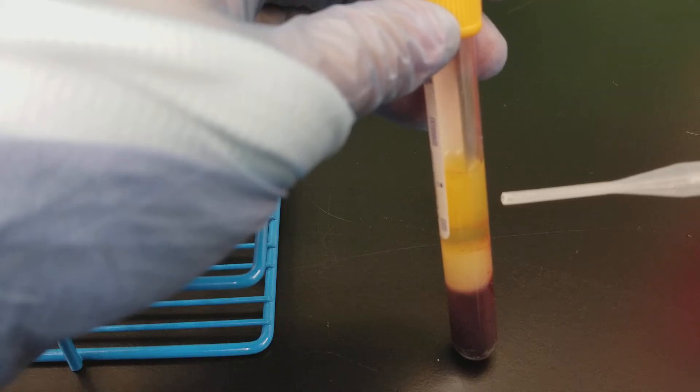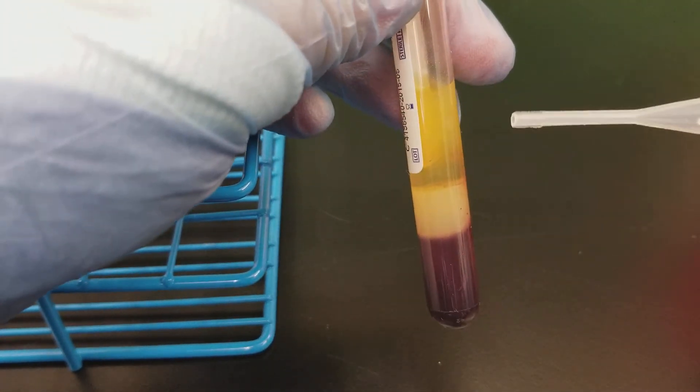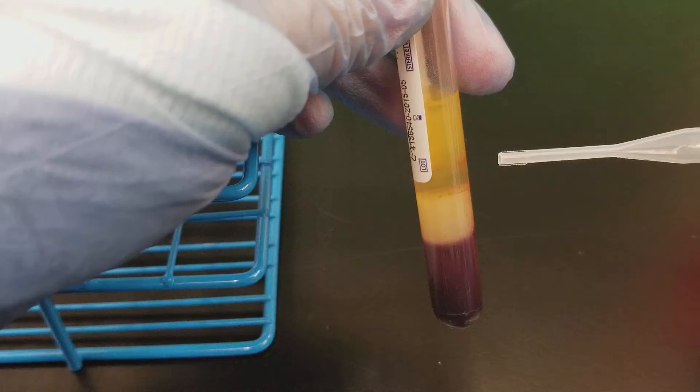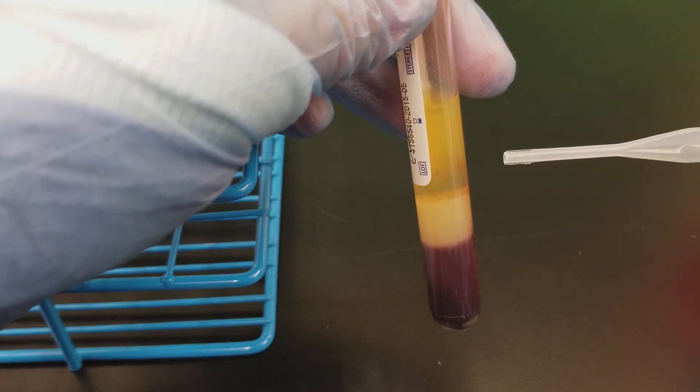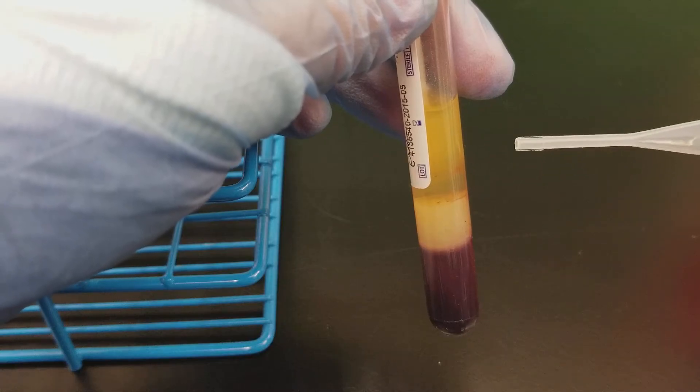So the difference between plasma and serum is that serum is the liquid portion of the blood after a clot, whereas plasma is the liquid portion of the blood before it's clotted.